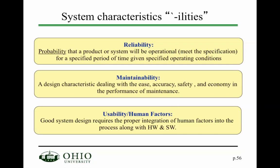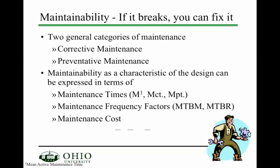The next module will cover the safety assessment of a particular system. The second ability is maintainability, and the third is usability. Maintainability, in a very simple way of thinking about it: if it breaks, can you fix it? Once the user is utilizing the product or system you designed and implemented, if it breaks, can you fix it? The two general categories of maintenance are corrective maintenance — something breaks and you fix it — and preventive maintenance, where rather than letting it break, you investigate and fix it proactively.